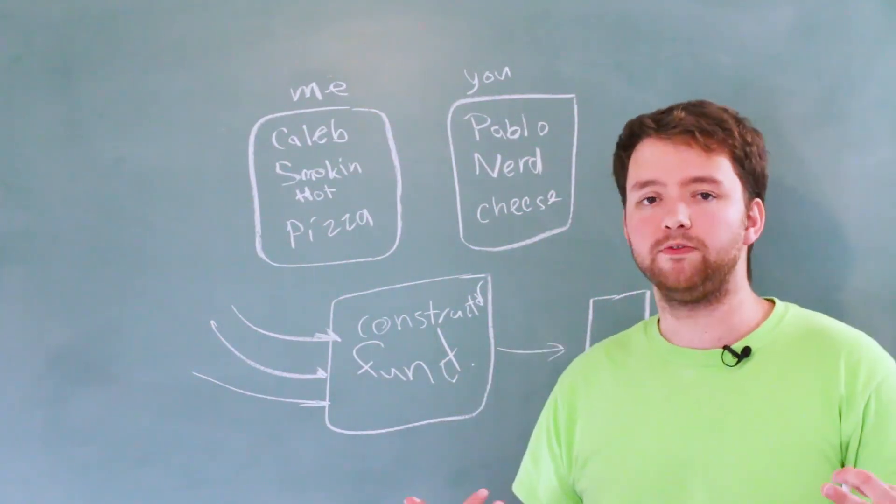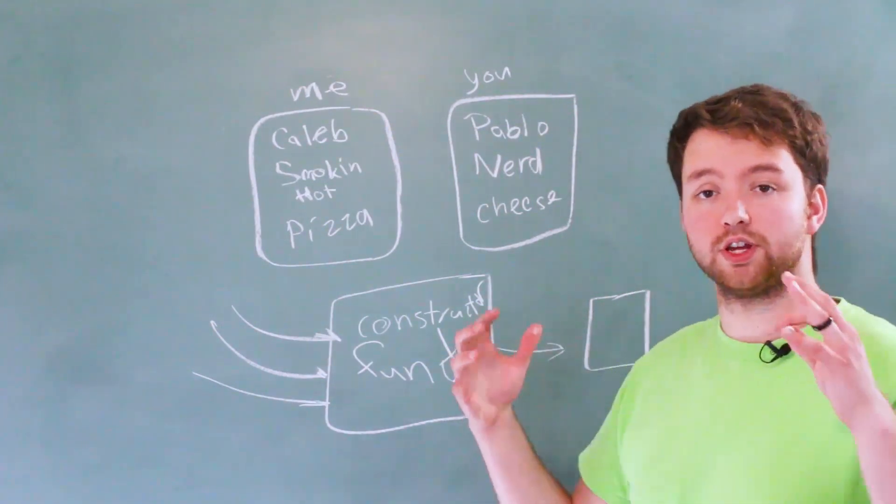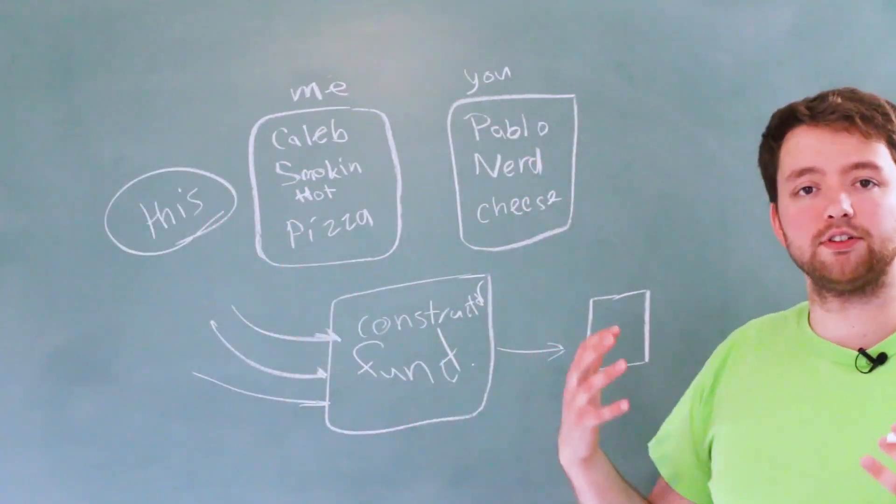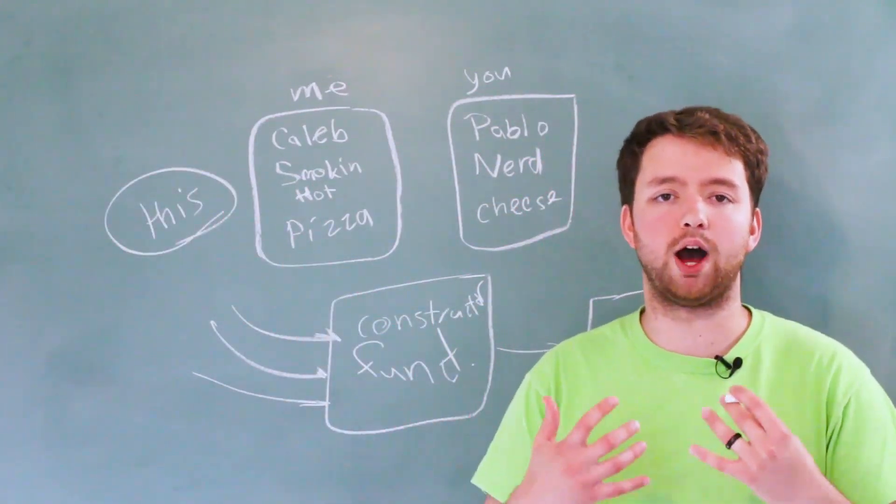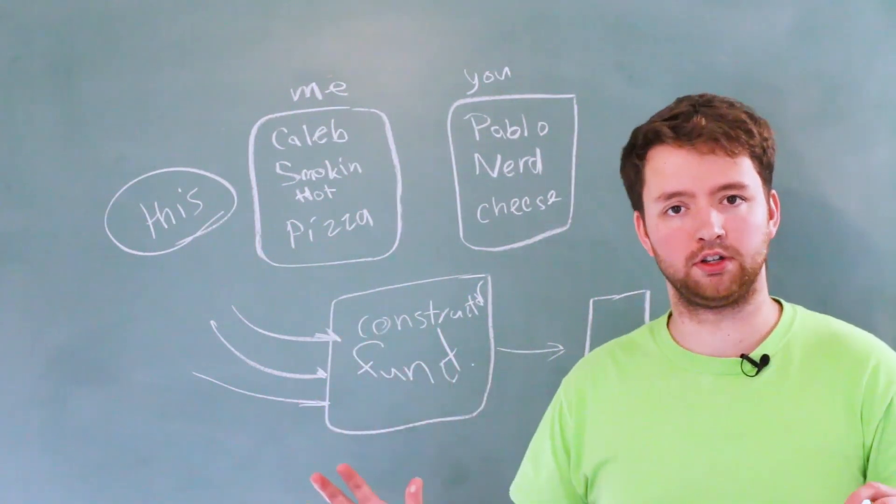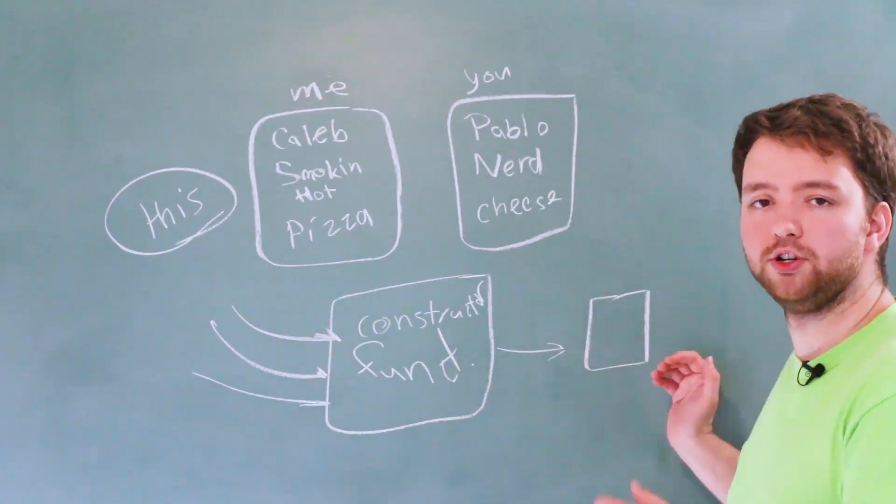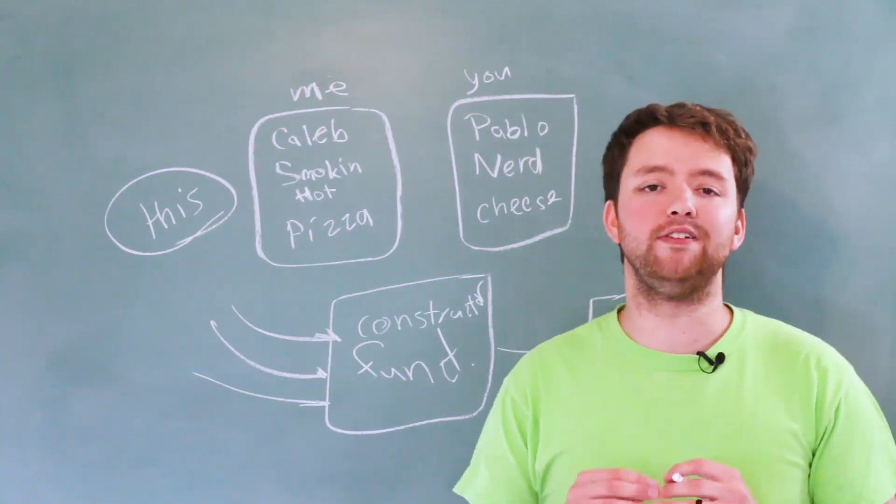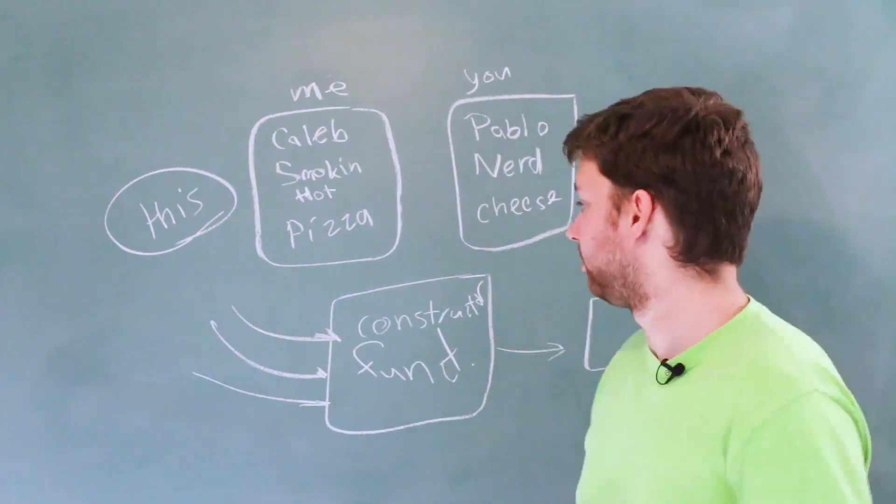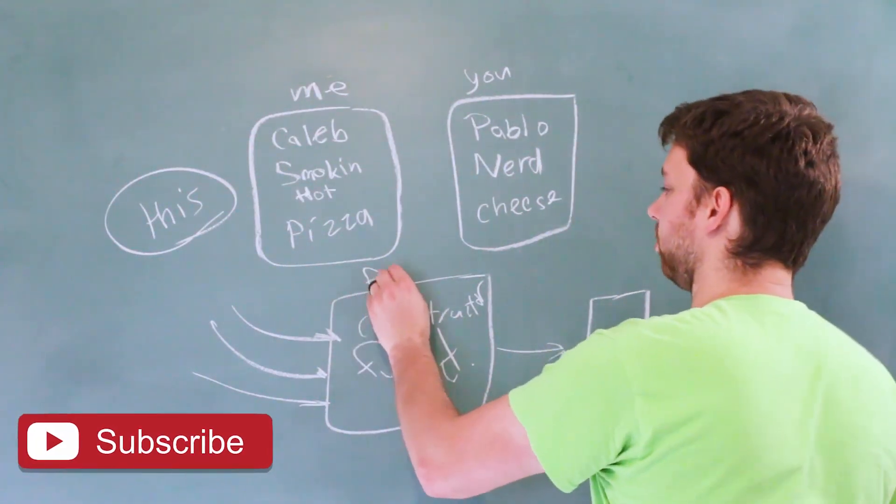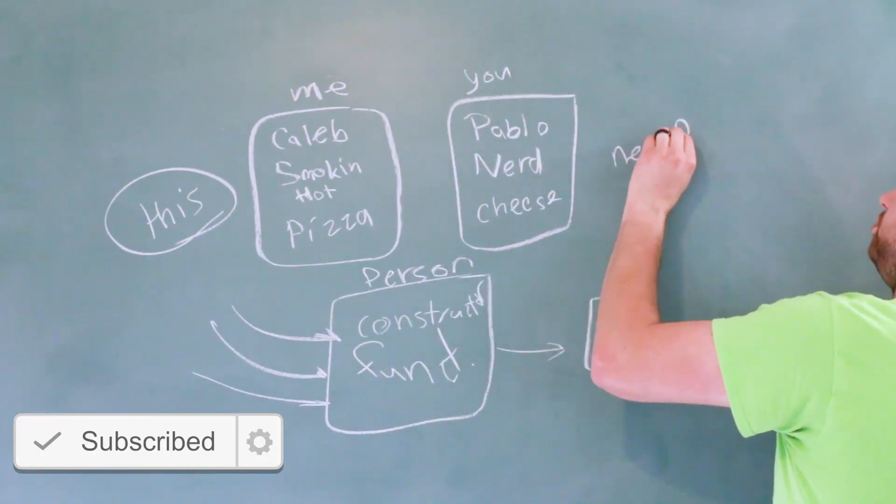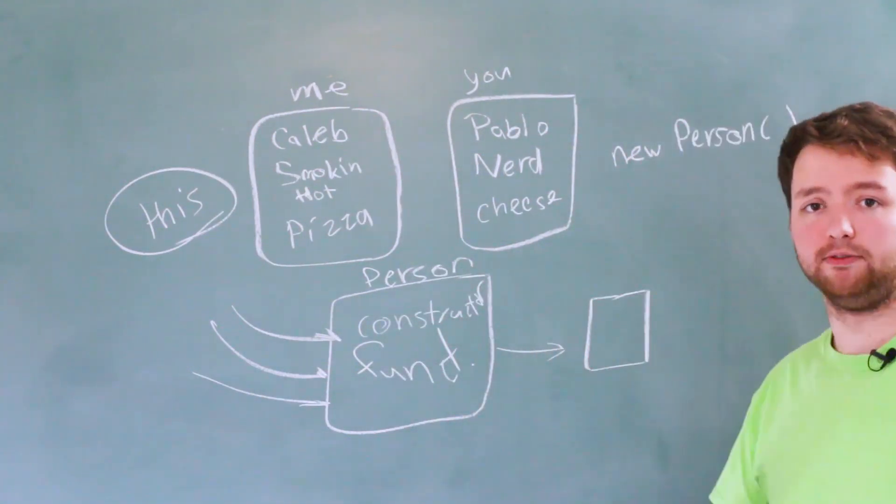So, let's talk a little bit about this constructor function. It's going to be just a normal function and it's going to use this, which we talked about. When you use this inside of a constructor function, it refers to the new object you are creating. Now, the constructor function is not going to have a return. So, you're not going to return a new object. Instead, you're going to invoke this function in a special way by prefixing it with new. So, for example, this might be a function called person and we might call it by saying new person, and then we would assign that to a variable.